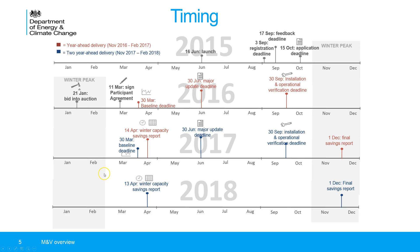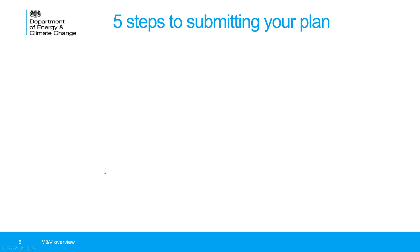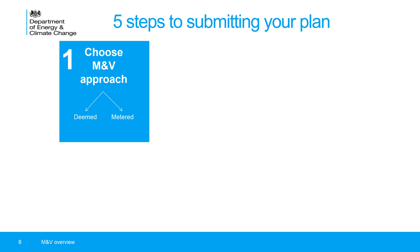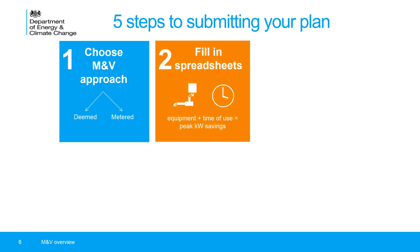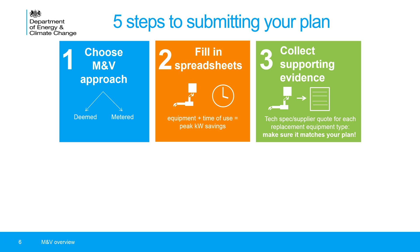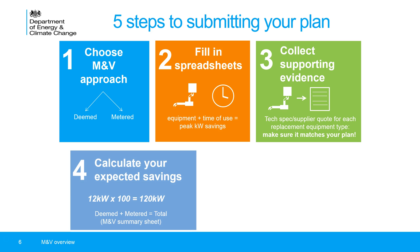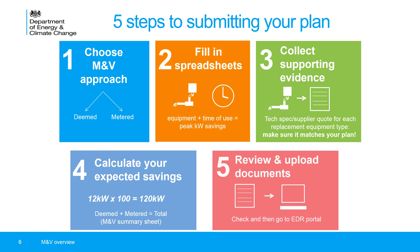There are five steps overall to submitting your MMV plan. First, choose your MMV approach — deemed or metered — which is a relatively straightforward decision. Second, fill in your spreadsheets including the details of your equipment and time of use to calculate your peak kilowatt savings. Third, collect your supporting evidence — that's a technical specification or supplier quote for each replacement equipment type — and make sure the technical specifications match the information in your plan, so if your spec says eight kilowatts your plan should also say eight kilowatts. Fourth, calculate your expected savings and enter the total in your summary sheet. Fifth, review and upload your documents on the EDR portal.